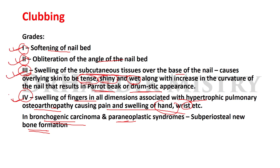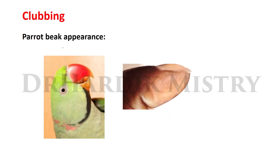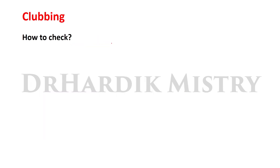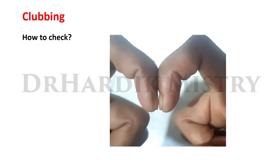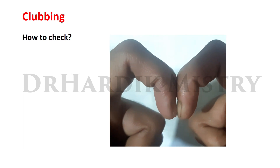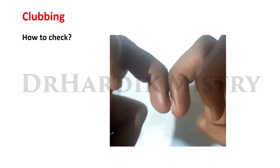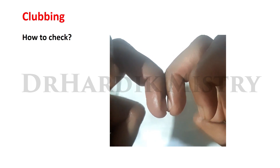The parrot-beak type of appearance is specifically seen in clubbing. To check for clubbing, place fingers together — if a space is found between two fingers or thumbs, clubbing is absent. If no space is found between the two fingers or thumbs, clubbing is present.